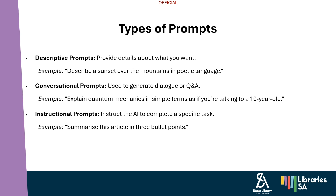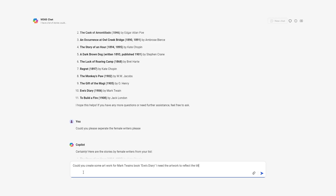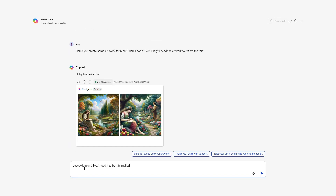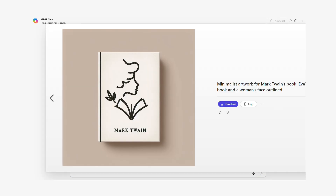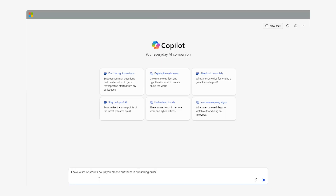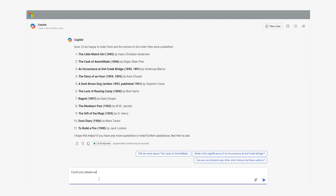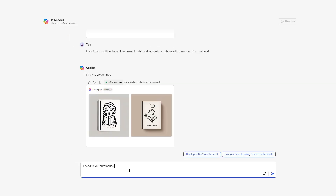Types of prompts — we have descriptive, conversational, and instructional. Descriptive prompts ask the AI to paint a picture, while conversational ones are useful for dialogue or explanation. Instructional prompts are useful when you need an AI to follow exact instructions, depending really on your needs.